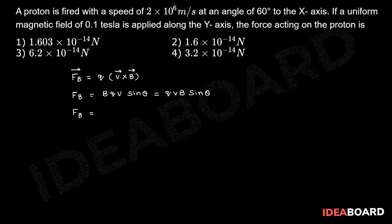So the value of charge q is 1.6×10⁻¹⁹, velocity V is 2×10⁶, magnetic field B is 0.1 tesla, and the angle θ is 60°.